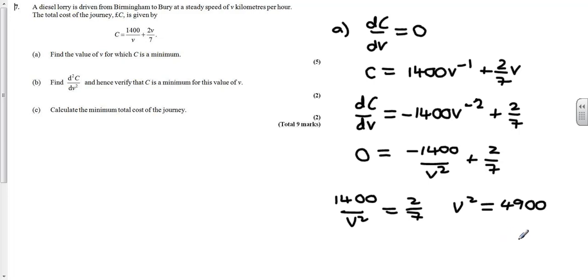And therefore v is going to be 70 or minus 70. Now considering v is a speed in kilometers per hour, v has got to be greater than zero. Therefore v is 70.